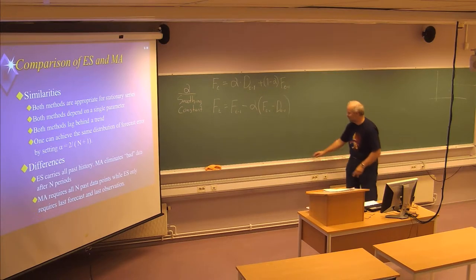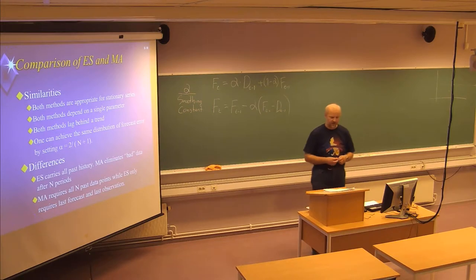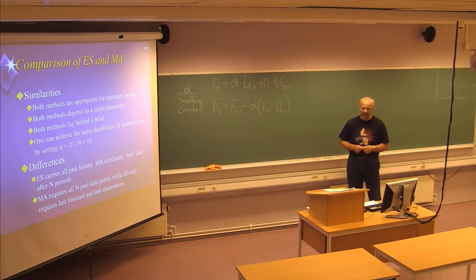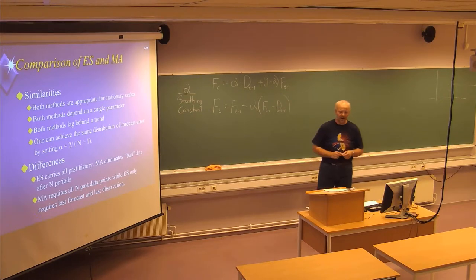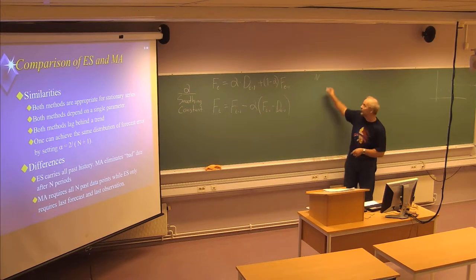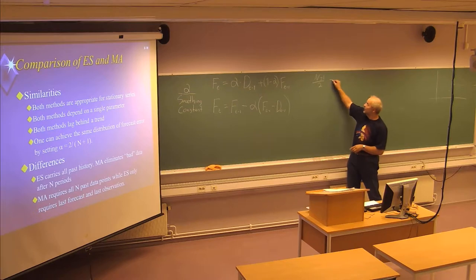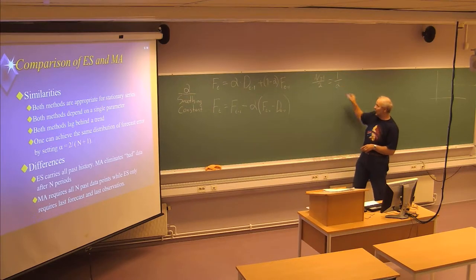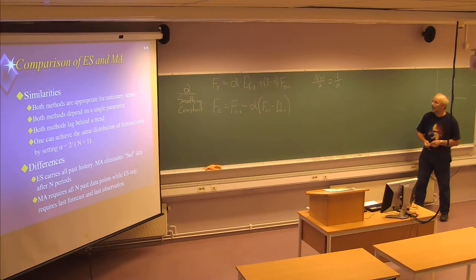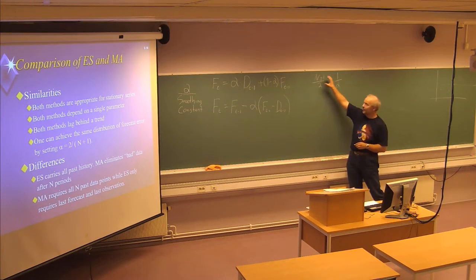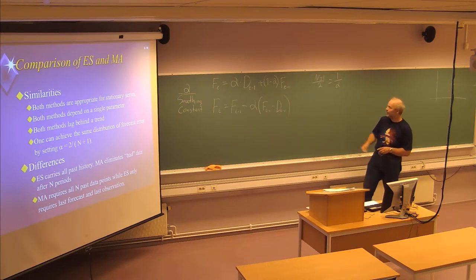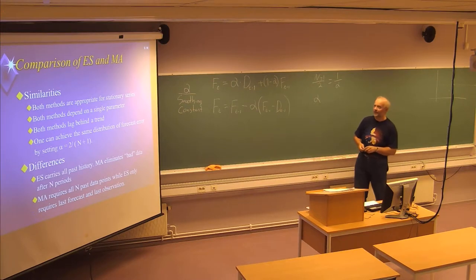You can achieve the same distribution of forecast error by setting alpha equal to 2 divided by (n + 1). To briefly describe how this is found: for the methods to be consistent with respect to the average age h, you should set the average h equal to (n + 1) / 2 for the moving average, and the average h in the exponential smoothing method will be 1 divided by alpha. Solving this equation with respect to alpha gives the formula: alpha = 2 / (n + 1).